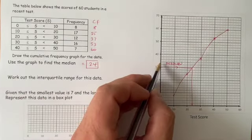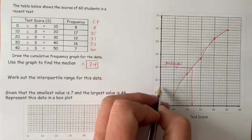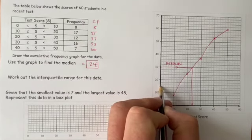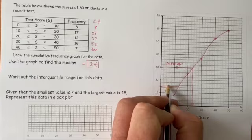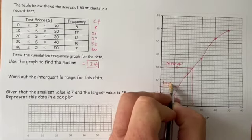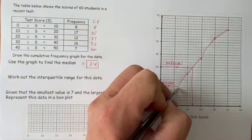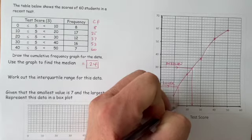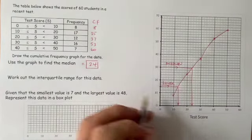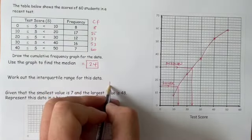To work out the interquartile range, I need to go to halfway there, which is 15, and draw a line across, and that will be the lower quartile, which off here looks to be around about 13 or 14, so that's your lower quartile.